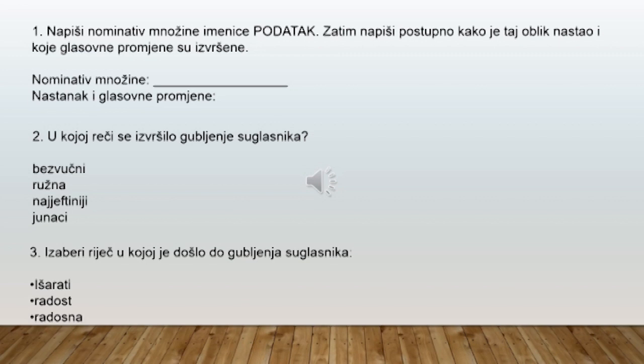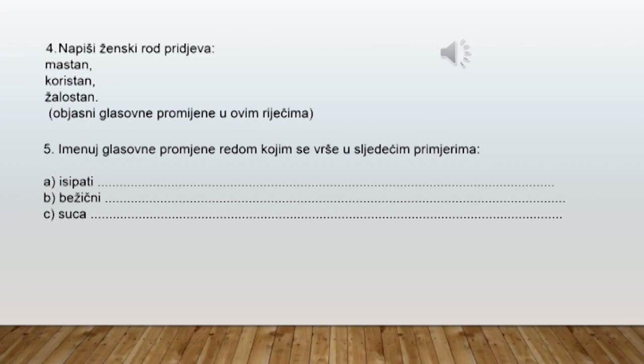Treći zadatak je da izaberete riječ u kojoj je došlo do gubljenja suglasnika, a ponuđene riječi su išarati, radost, radosna. Kako u ženskom rodu glase pridjevi mastan, koristan, žalostan? Imenujte glasovne promjene onim redom kojim su se vršile u sljedećim primjerima: sipati, bežični, suca.